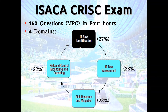The CRISC exam is broken into four domains: risk identification, risk assessment, risk response and mitigation, and risk and control monitoring. In ISACA's taxonomy they have a two-step process — identify what the risks are, then assess impact and likelihood. Some people call the first part risk assessment then risk analysis. Some put it all together and just call it risk assessment, like much of NIST. Watch out for terminologies.